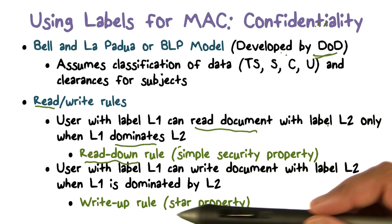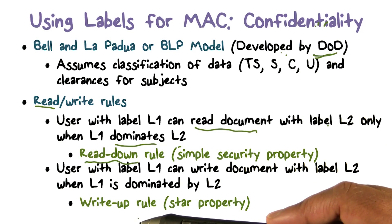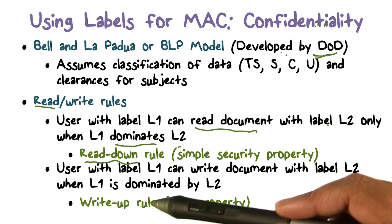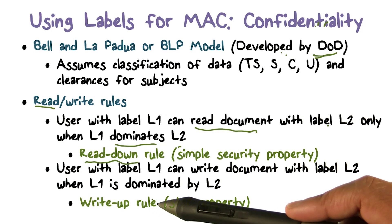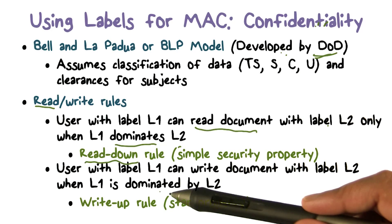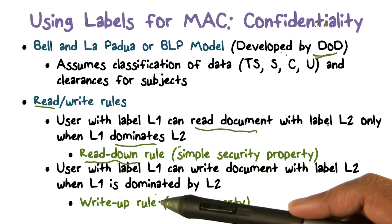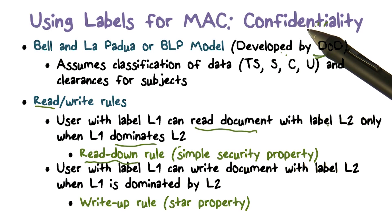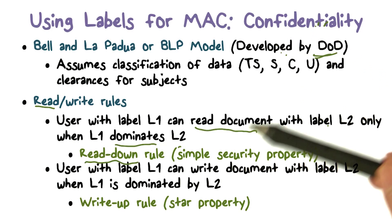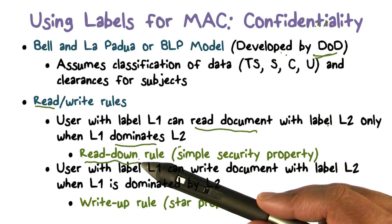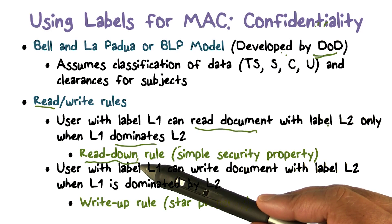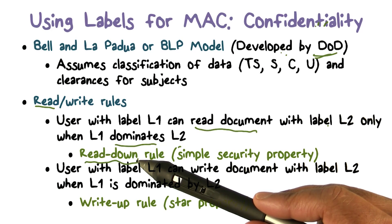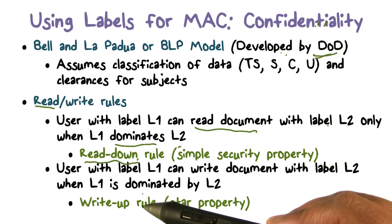That would mean information flows from a more sensitive level to a user who should not have access to it, so you can't allow write-downs. You might question why an unclassified user would have top secret information, but if they wrote a top secret document, a top secret user would read it — information flows from unclassified to top secret, but that doesn't violate our confidentiality requirement. So when a request comes in, the user has their label and the target document has its own label. If the user is making a read request, the user's label must dominate the document's label to satisfy the simple security property, or read down rule.